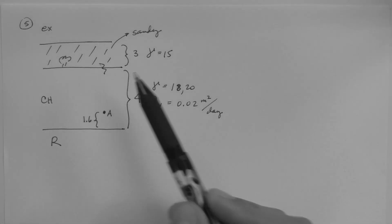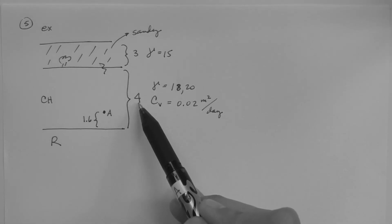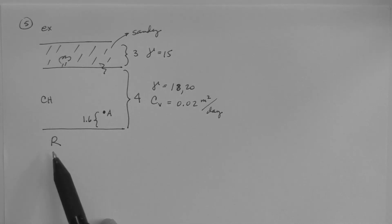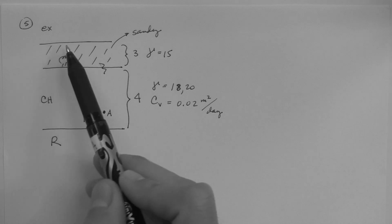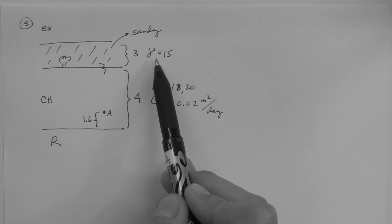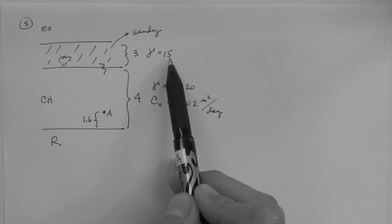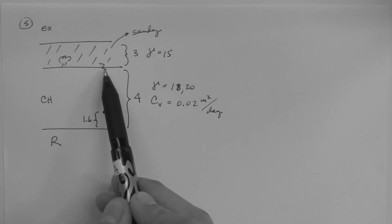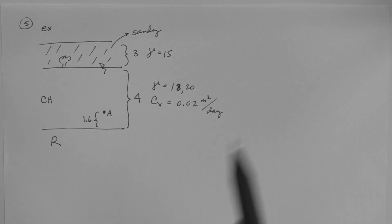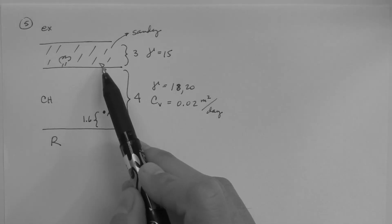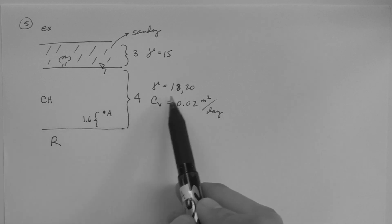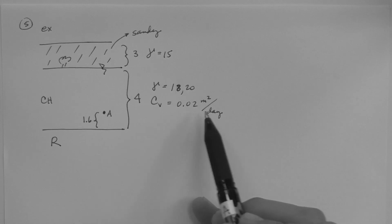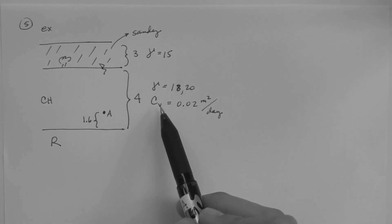This is the ground surface, this is the clay layer — it's four meters thick. There's a point located 1.6 meters from the interface between the clay and the rock. We're going to place a fill that is three meters thick and has a unit weight of 15 kilonewtons per meter cubed. The fill is sandy, the clay layer is saturated, the saturated unit weight of the clay is 20, the dry unit weight is 18, and the coefficient of consolidation is 0.02 meters squared per day for the clay layer.